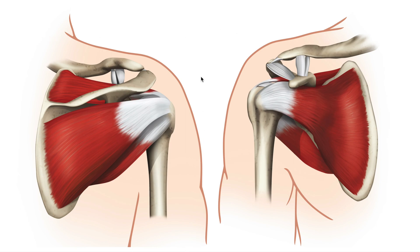Right here we have the posterior aspect of the scapula, and then we have the anterior aspect of the scapula right here. The way that I know that is that the posterior aspect, I can see the spine of the scapula right here, and then the anterior aspect, I can see the coracoid process along with the clavicle. I also have this chest line of my client, so I know this is the anterior aspect.